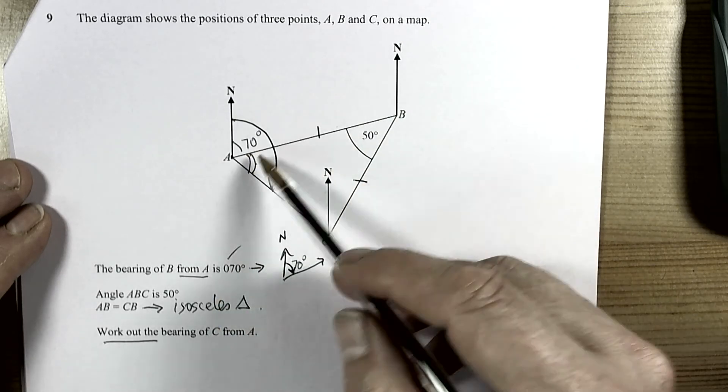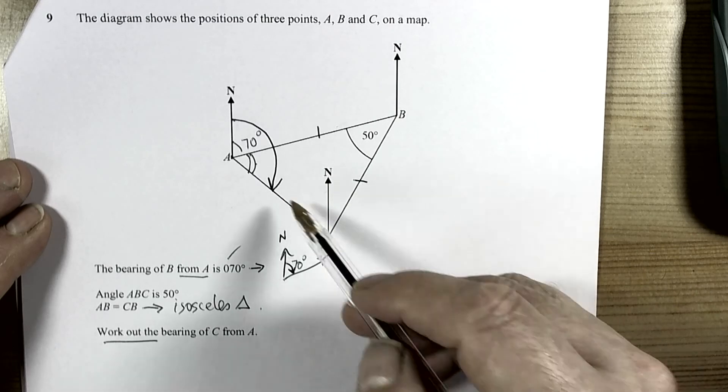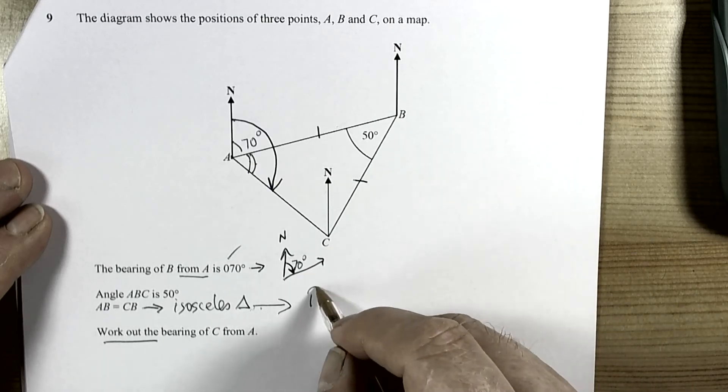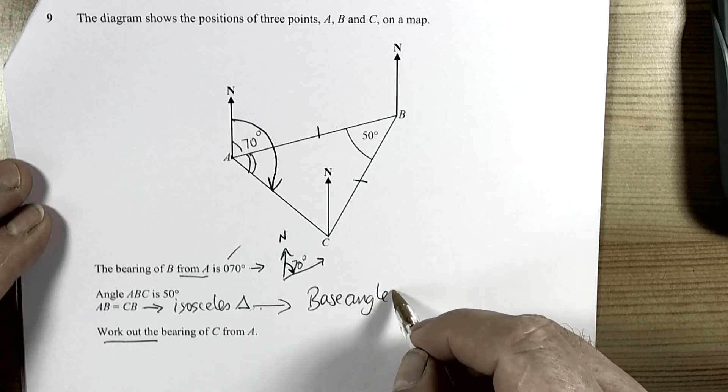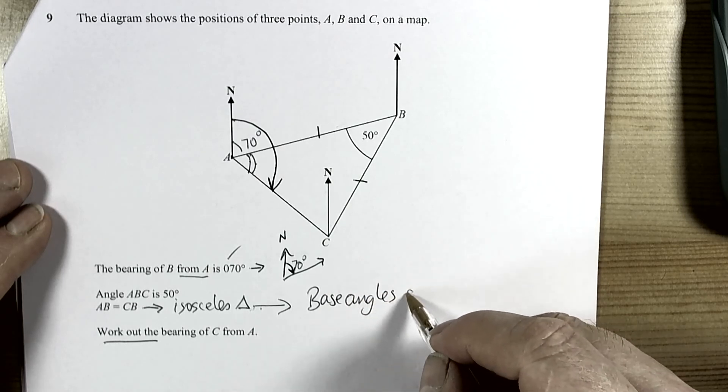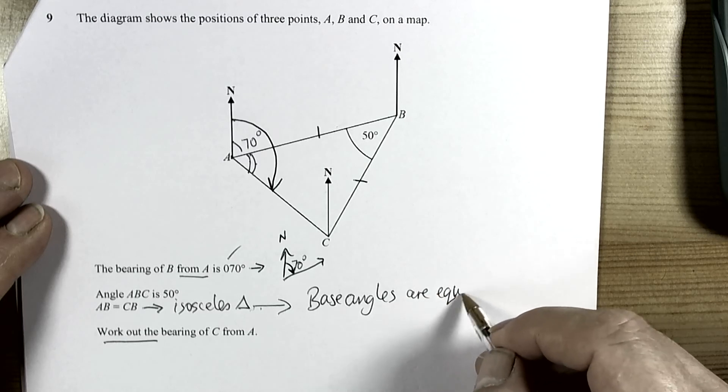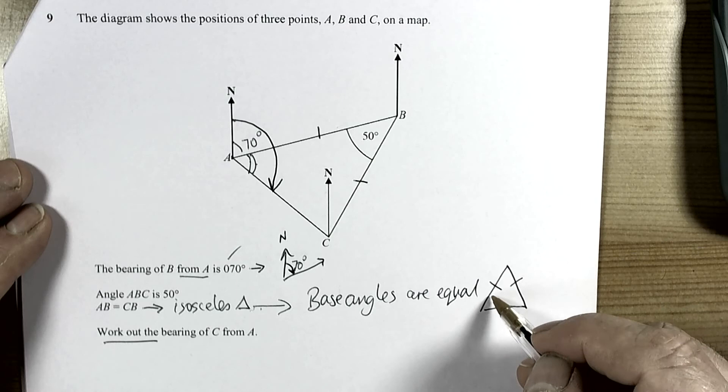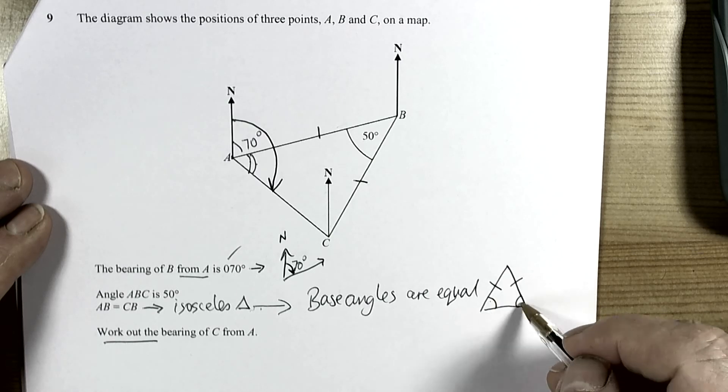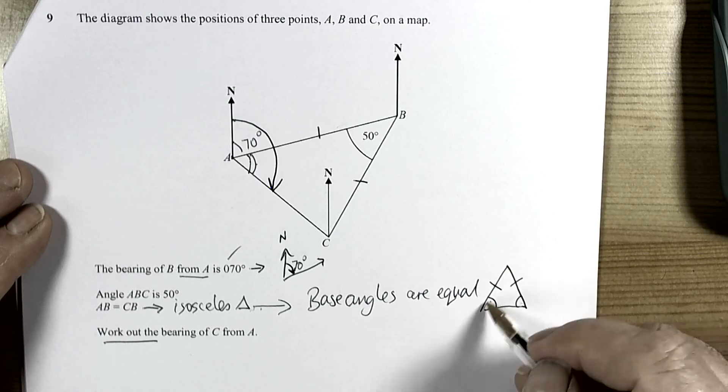Because this is an isosceles triangle then we know that the base angles of an isosceles triangle are equal. So again using our facts about what we know, we know that isosceles triangle base angles are equal. So the base angles are the two angles at the end of the triangle following the lines that are of equal length.